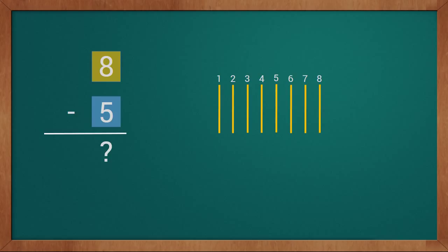We have eight sticks. Our second value is five, so we have to remove five sticks from eight sticks: one, two, three, four, five. We remove five sticks.